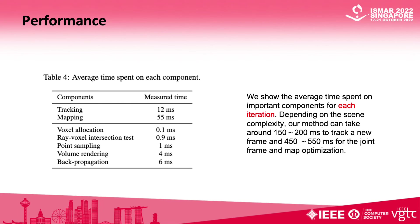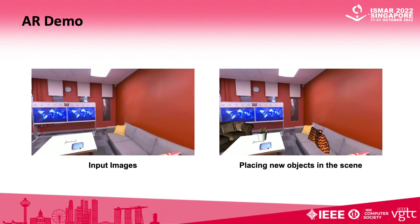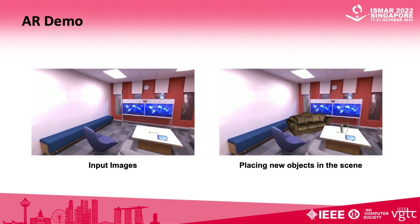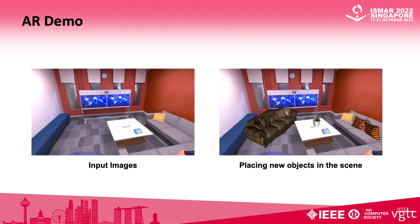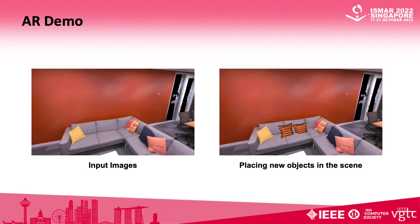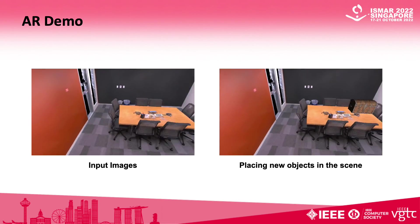We show the average time spent on important components for each iteration. Depending on the scene complexity, our method can take around 150 to 200 milliseconds to track a new frame, and 450 to 550 milliseconds for the joint frame and map optimization. Our system can be applied to AR applications with minimum modification. We show here an example of randomly placing objects inside the virtual scene.